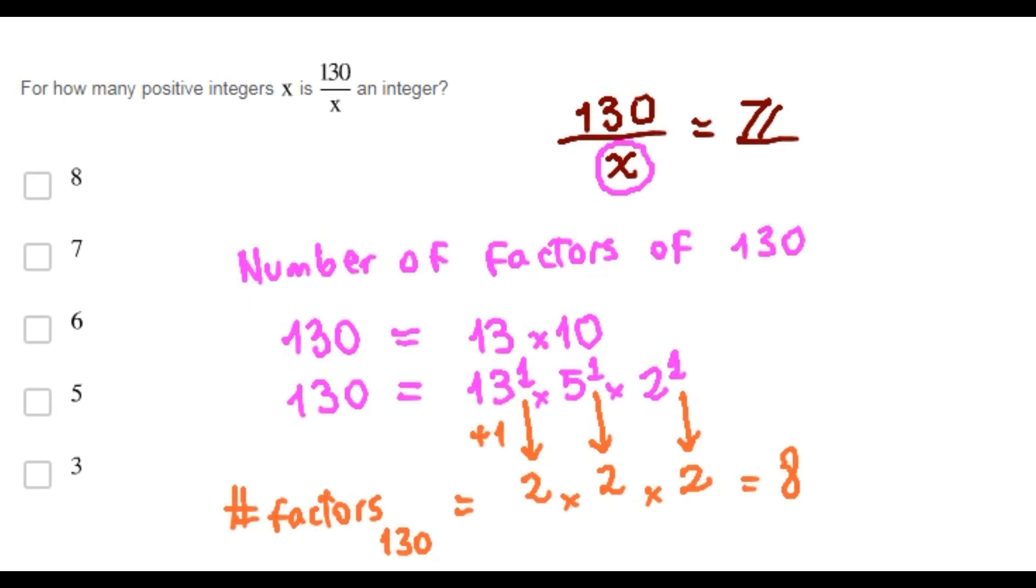130 has 8 different positive factors. In other words, there are 8 different values for x in order to have an integer quotient in this division. Choice A is correct.